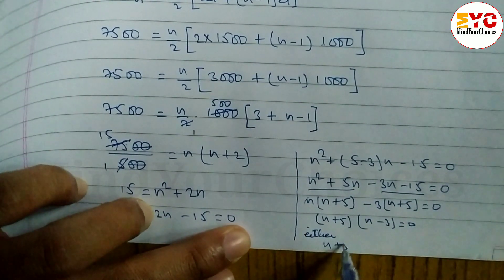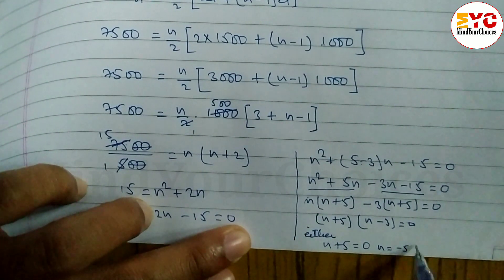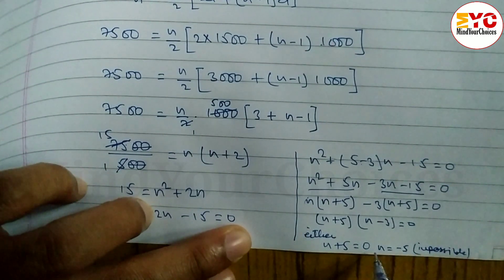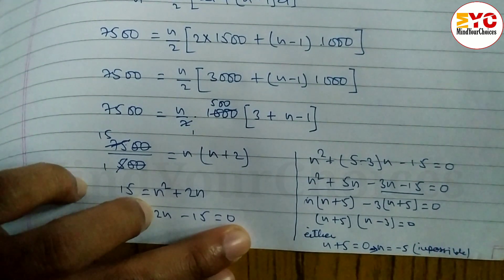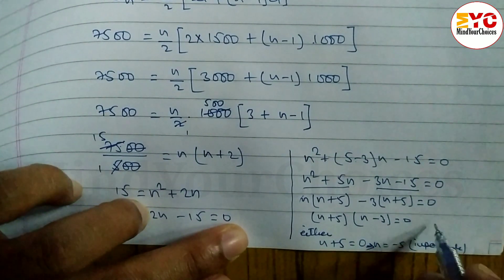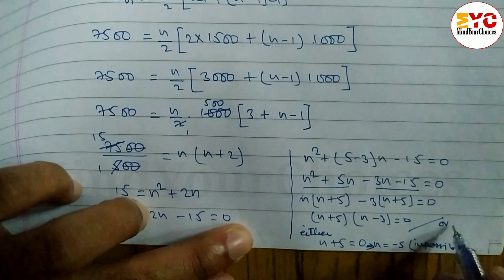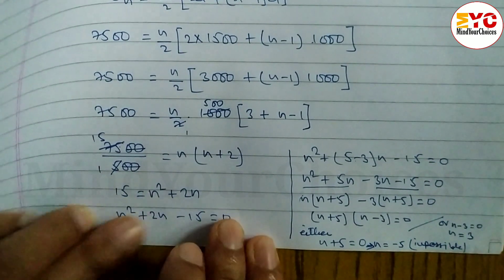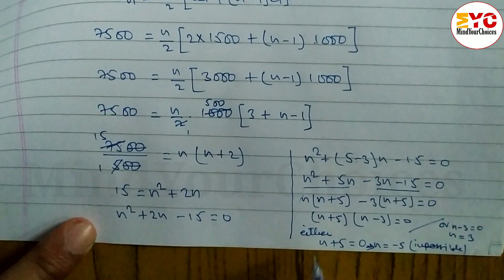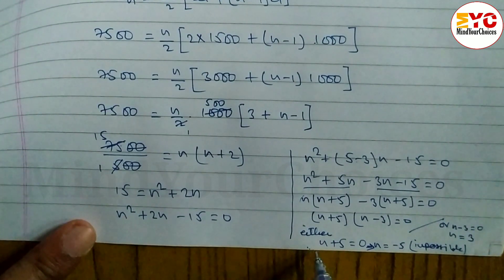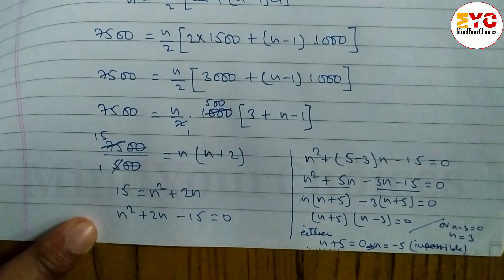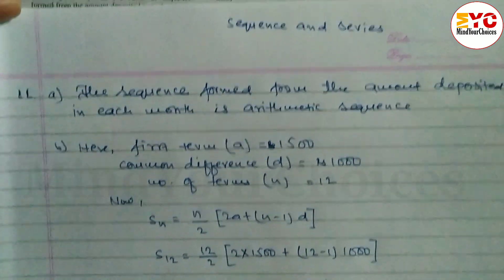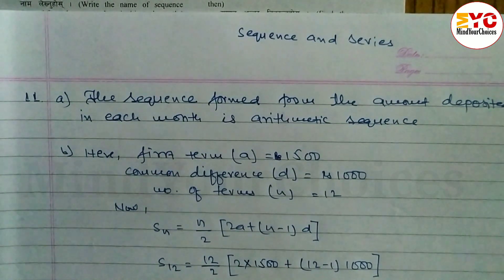Either n + 5 = 0, giving n = −5, which is impossible because n is the number of months and cannot be negative. Or n − 3 = 0, giving n = 3. Therefore, Rs. 7,500 is deposited after 3 months. Hope you understand this question number 11 from class 10, second series.